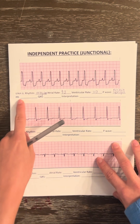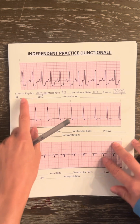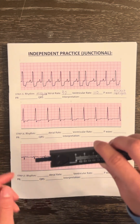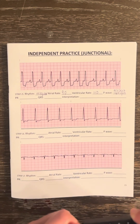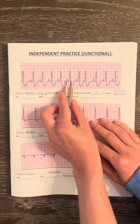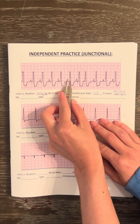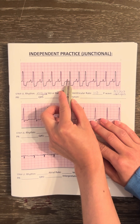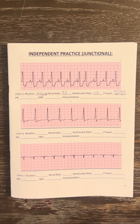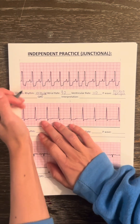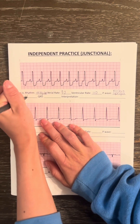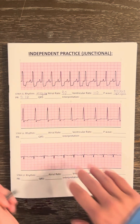Now we have to identify the P-R interval. Take your calipers and line it up to find the P-R interval. That looks like it's about four boxes, so the answer is 0.16.